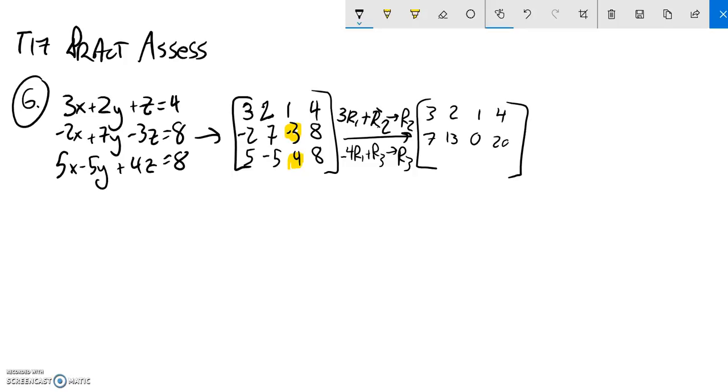Now I'll do this one: negative 4 times the first row plus the third row. Negative 4 times 3 is negative 12, plus 5 is negative 7. Negative 4 times 2 is negative 8, plus negative 5 is negative 13, then 0. Negative 4 times 4 is negative 16, add that to 8, that's negative 8. You'll notice the system starts to look a little bit strange. I got my two zeros here and I just need a zero here.